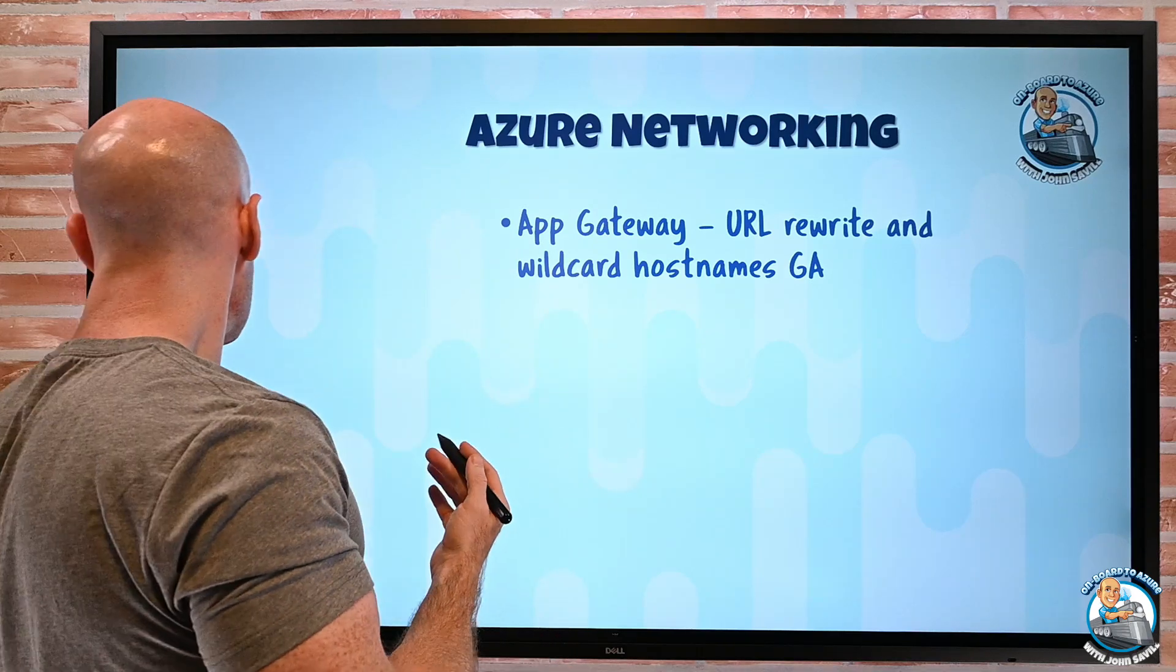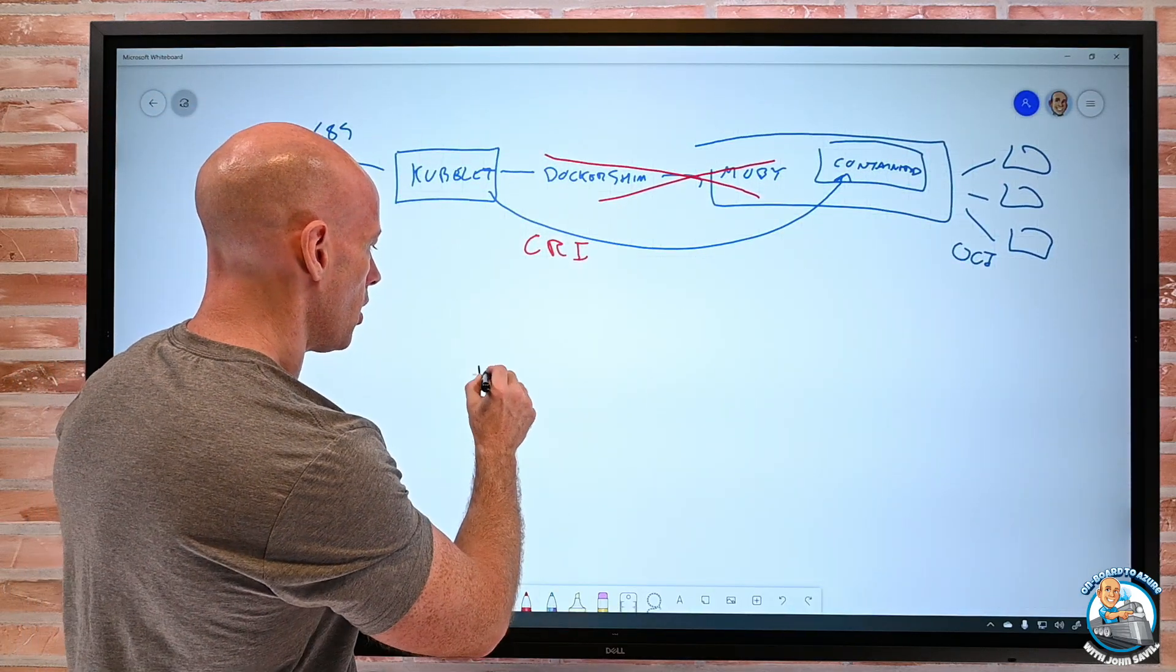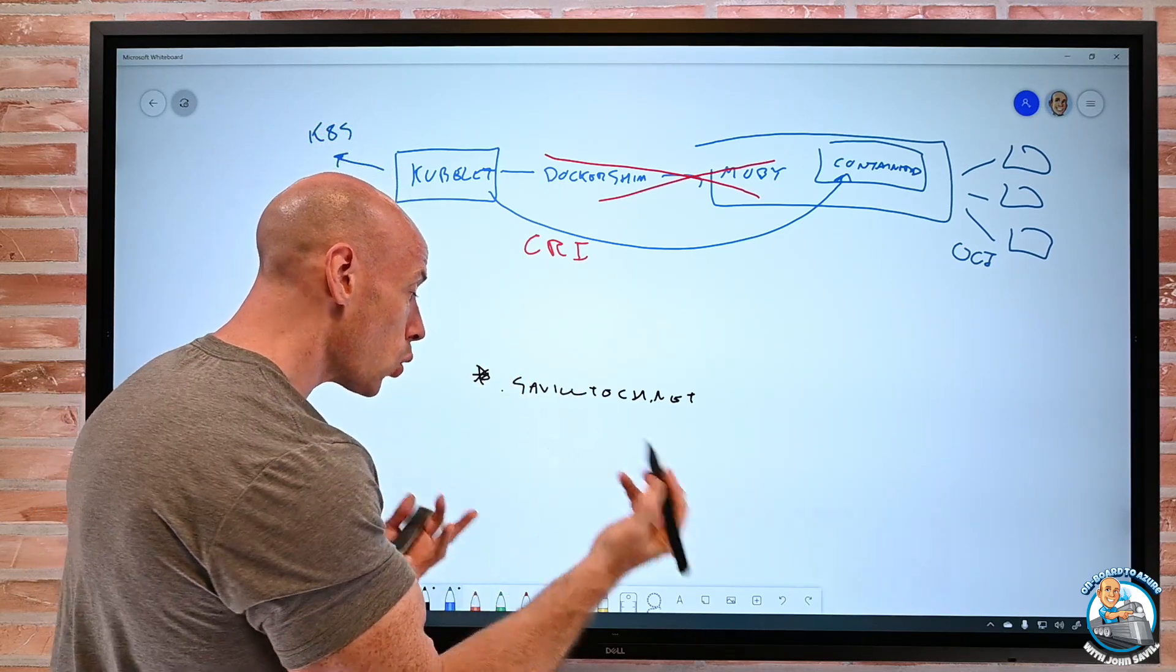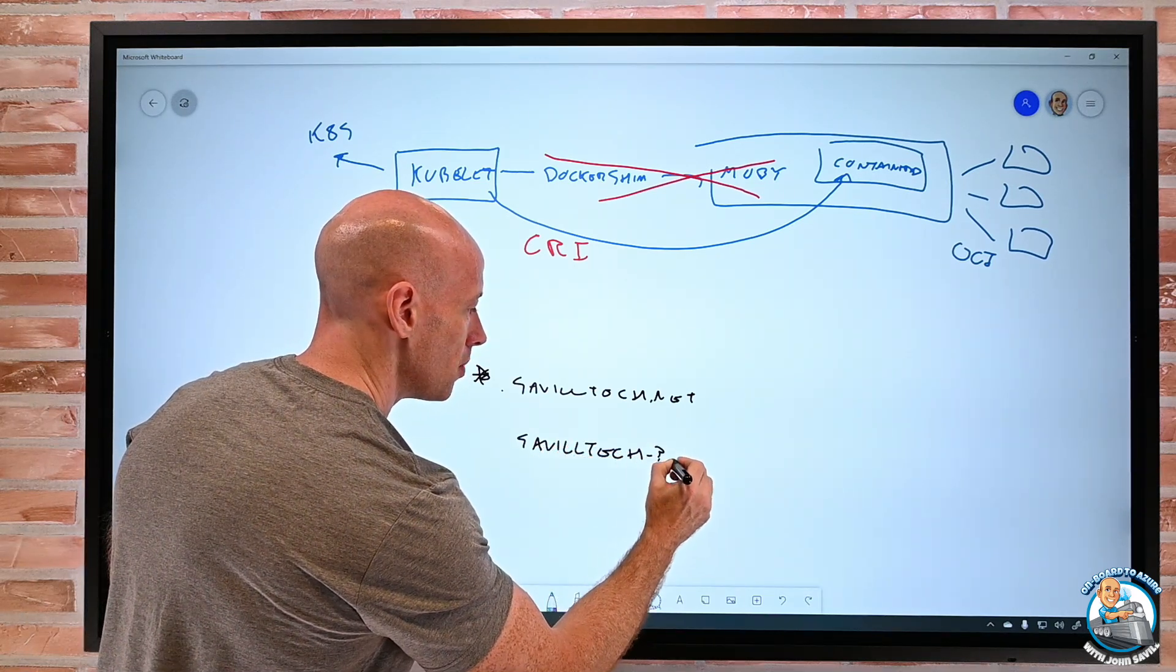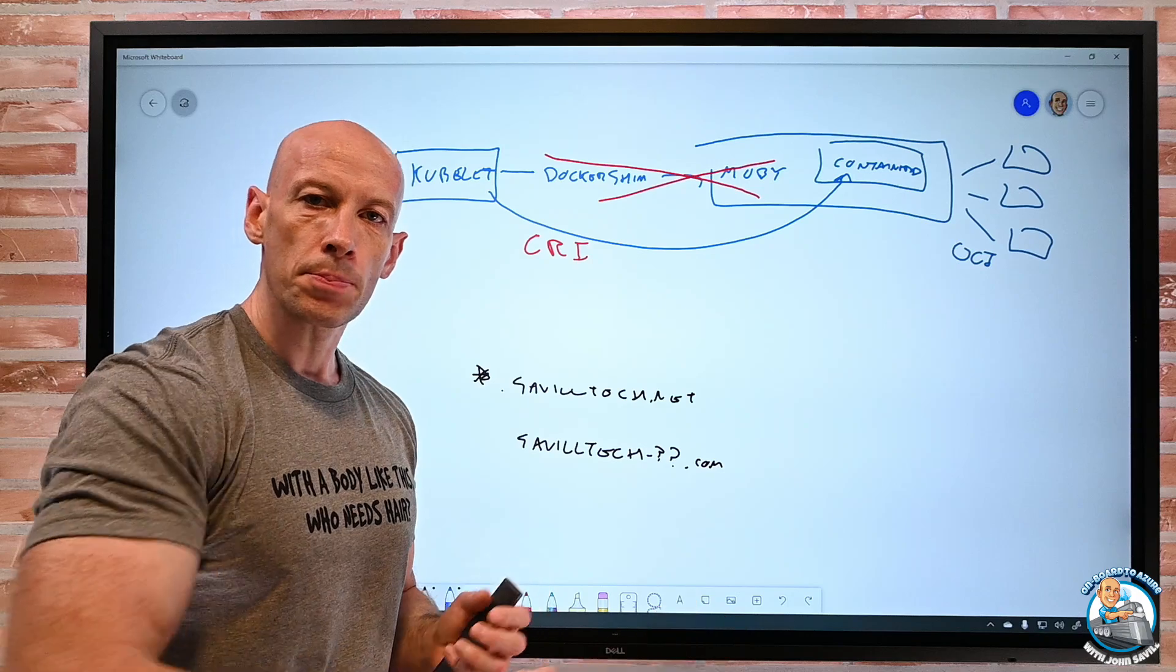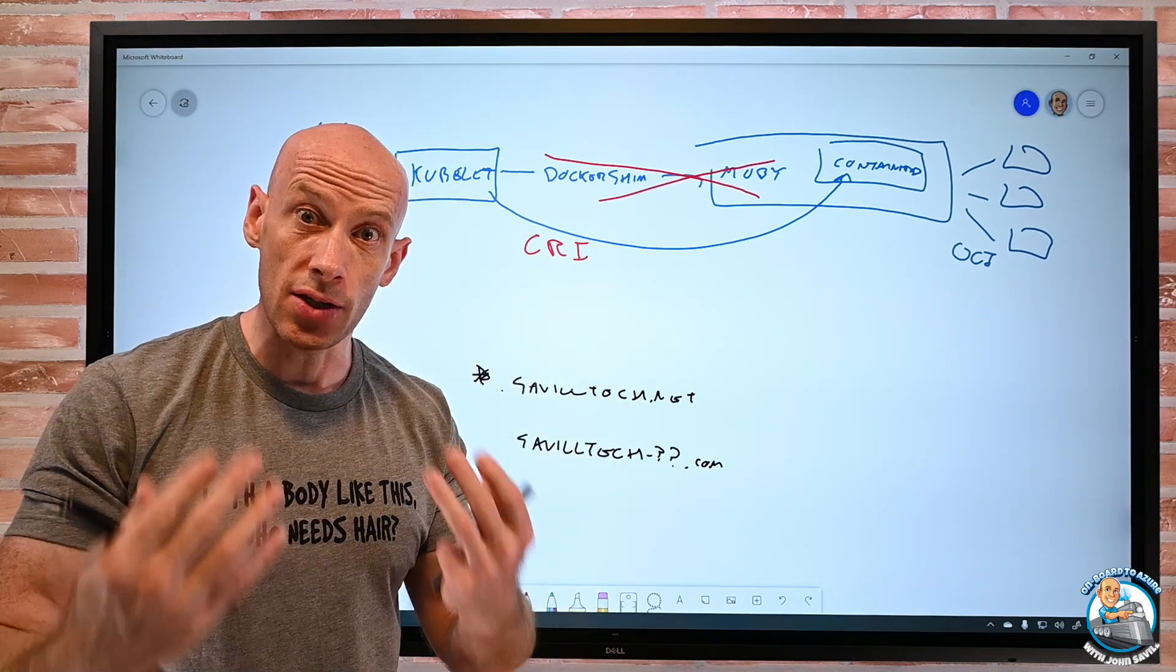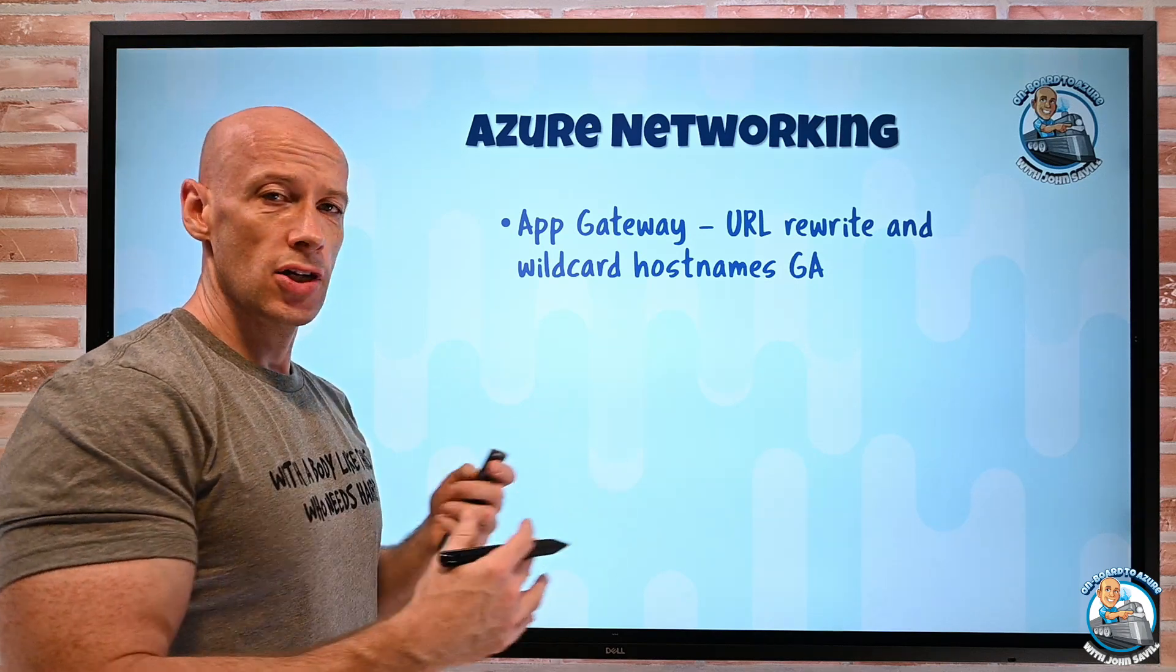On the wildcard, as we would expect, I can absolutely do like star.saviltech.net. That would take anything I put in that component. But I can also use question mark. So I could have saviltech-??dot com. So that could actually be saviltech-10.11.12. So wildcard, the asterisk is unlimited characters within that segment. Question mark is one character, so it wildcards a single character. So I can now use that as part of my App Gateway configurations for those rules.